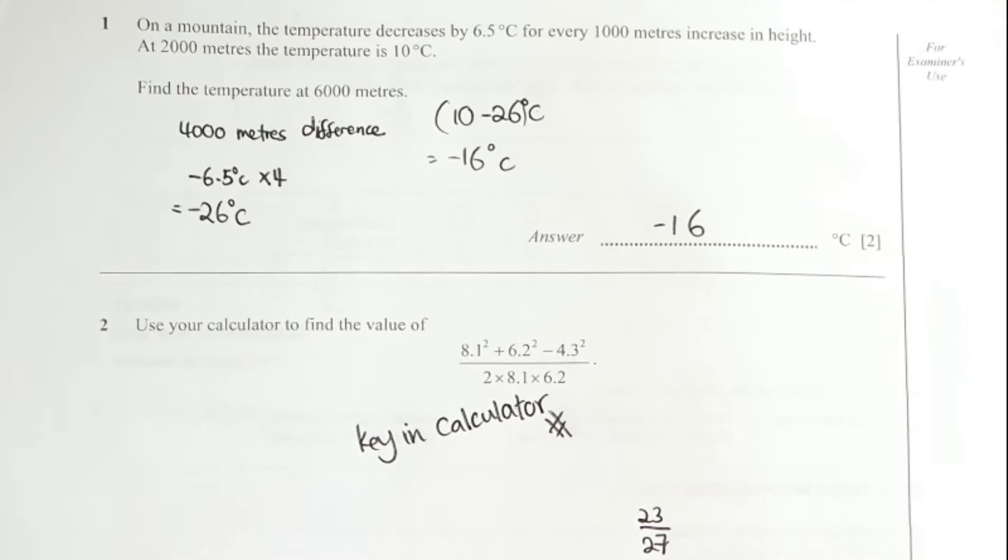For the first question, the key thing to note is that for every 1000 meters, the temperature will decrease by 6.5 degrees. From 2000 to 6000 there's 4000 meters difference, hence I took negative 6.5 times 4 equals negative 26 celsius. So from 10 celsius minus 26 celsius, your final result will be negative 16 celsius.